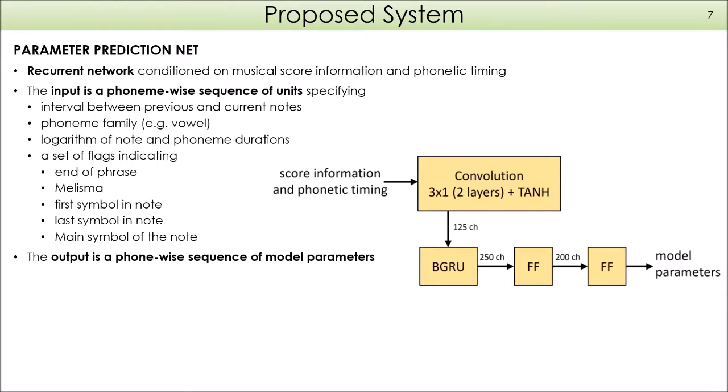The parameter prediction net is a network that receives the score and phonetic information and outputs the model parameters. It consists of two convolutional layers with tanh activation, followed by a bidirectional gated recurrent unit and two feedforward layers. The input is a phoneme-wise sequence of units describing the score and phoneme segmentation, including the interval between previous and current notes, the phoneme family, the logarithm of notes and phoneme durations, and flags indicating if we are at the end of phrase, it's a melisma, or the first, last, or main symbol in the note. The output is a phoneme-wise sequence of the model parameters.